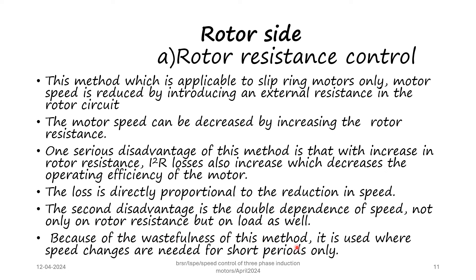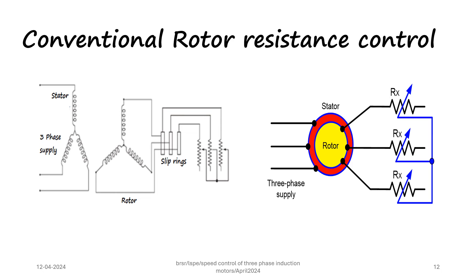Because of the wastefulness of this method, it is used only where speed changes are needed for short periods. Rotor resistance control can be achieved in the conventional way or the static way. In the conventional method, the slip rings are externally connected to a rheostat. By adjusting the resistance of this variable rheostat, the net rotor resistance is increased, thereby changing the motor speed.